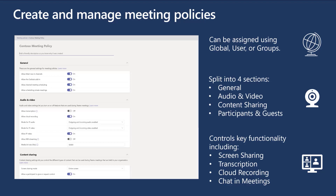Meeting policies are there to control the functionality of users in Teams participating in meetings. You can assign these at a global level affecting everybody without a user policy, at a user level targeting individual users or personas, or manage them using groups — grouping identities in an Azure AD group and using policy assignment, which is a far easier way of managing user-scoped policies. We split meeting policies into four sections: general, audio and video, content sharing, and participants and guests. Within meeting policies, key functionality items you can turn on or off include screen sharing, transcription, cloud recording, chat in meetings, NDI streaming, and many more.